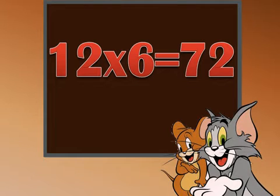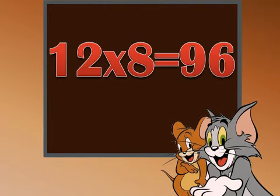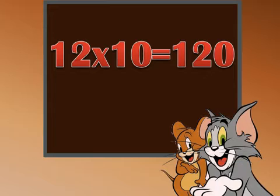12 sixes are 72. 12 sevens are 84. 12 eights are 96. 12 nines are 108. 12 tens are 120.